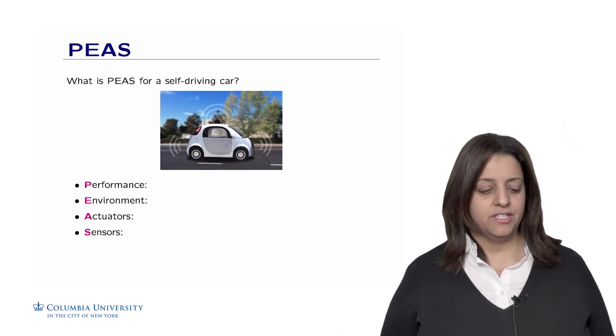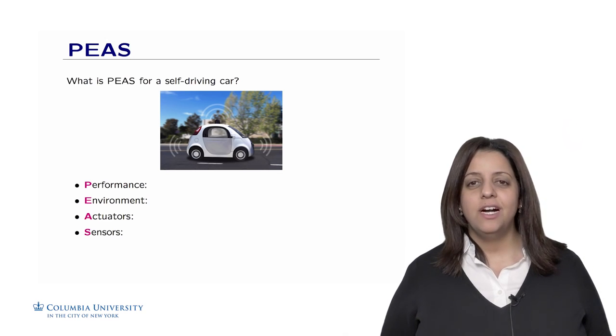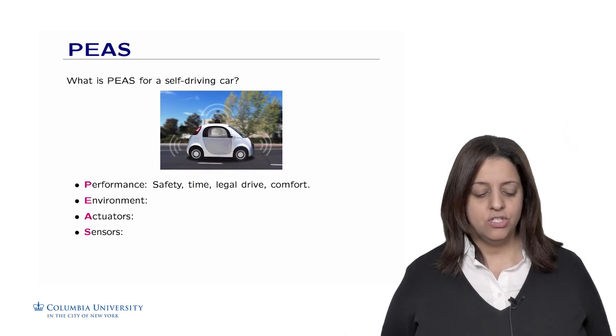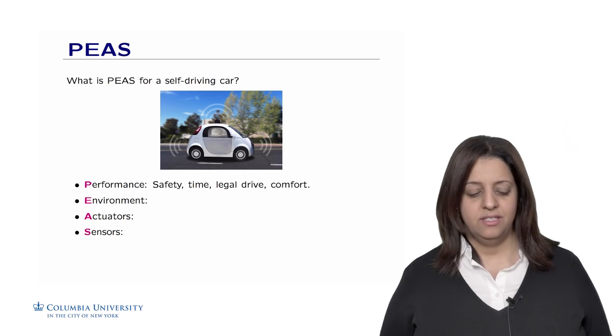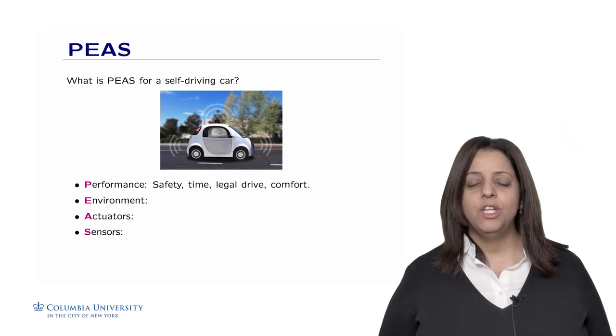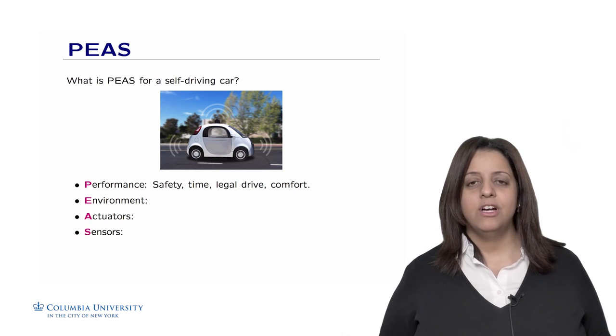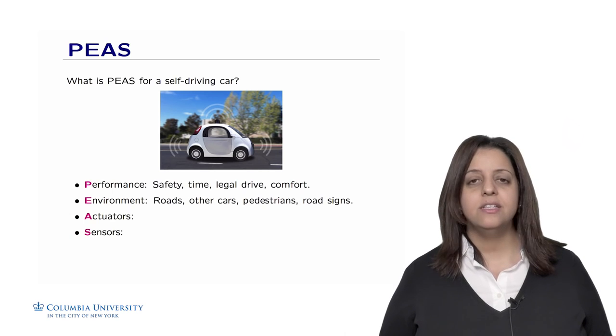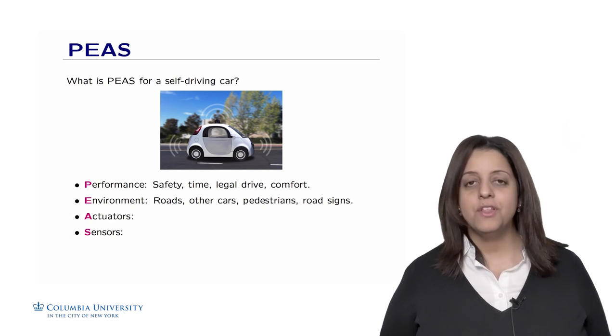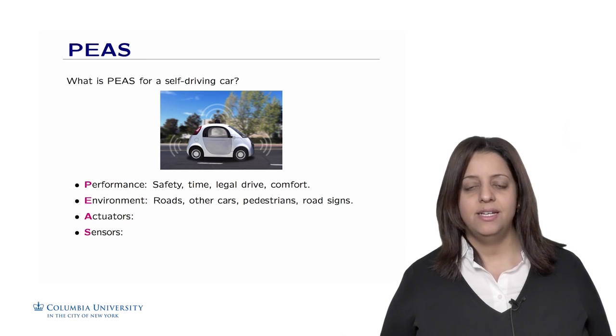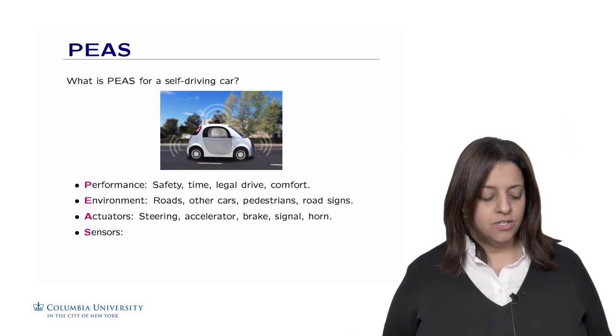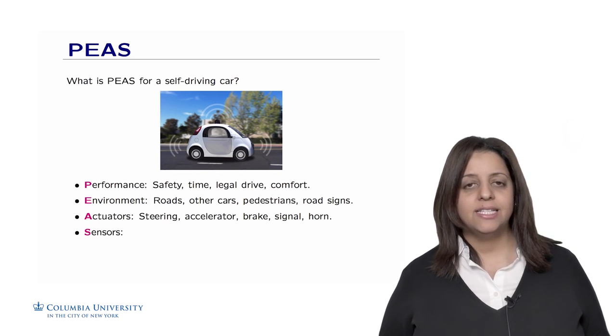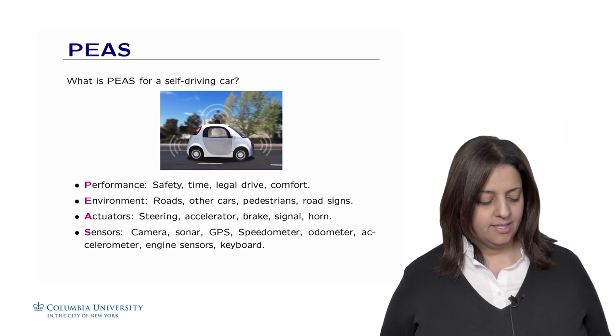Let's define PEAS for some intelligent agents, starting with the self-driving car. For a self-driving car, a passenger would care about the following performance: the safety of the passenger, its comfort, and the time to destination. We care also about legal driving. We don't want a self-driving car that crosses red lights or harms pedestrians. The environment of a self-driving car is all the roads, all the cars, pedestrians, road signs, and so on. The actuators are everything that makes the car move or interact with the environment, such as the steering, accelerator, brake, signal, horn, et cetera.